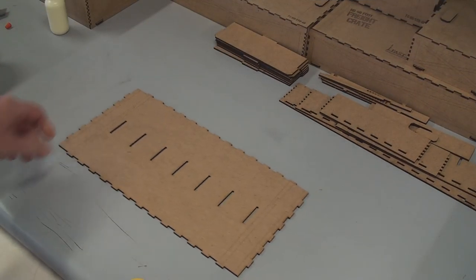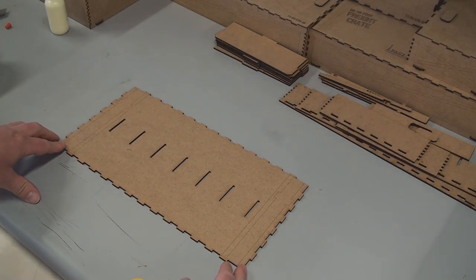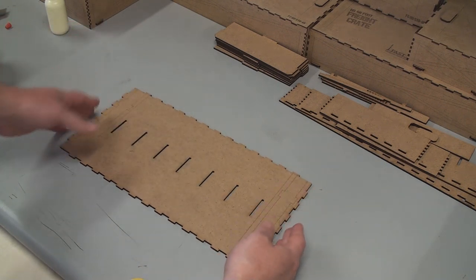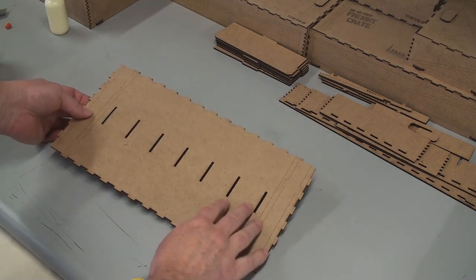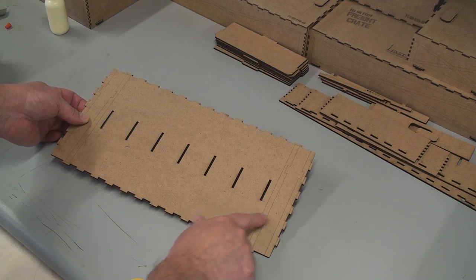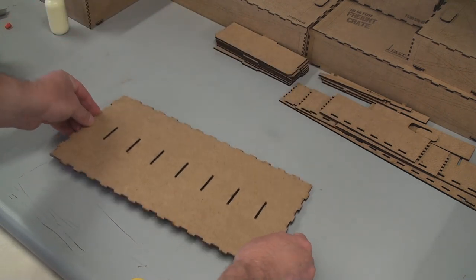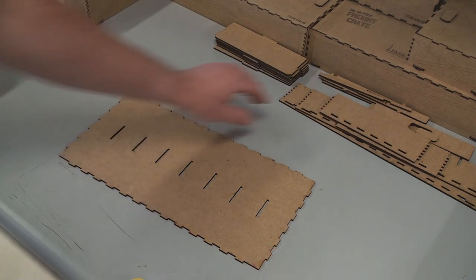Now the base goes together in a similar manner to the lid. There's four sides and the bottom. The bottom of the base is the part that will have these etchings on. So we want to make sure that that's facing down when we put all our side pieces on.